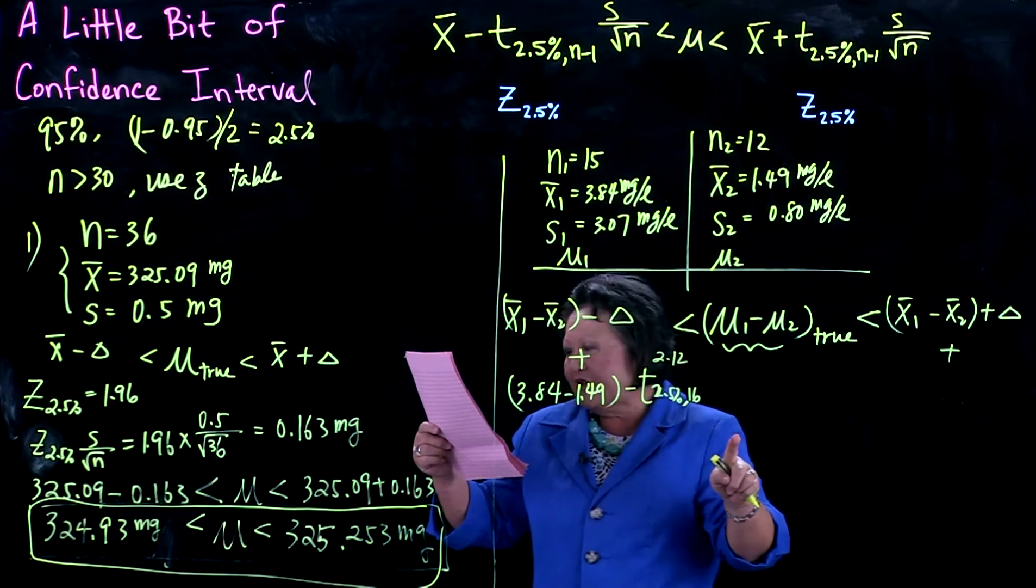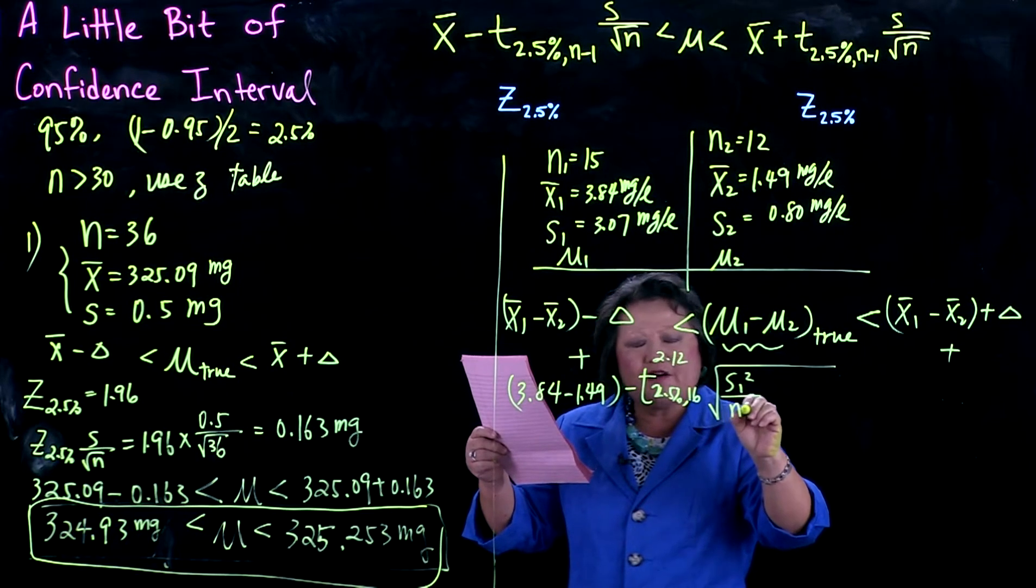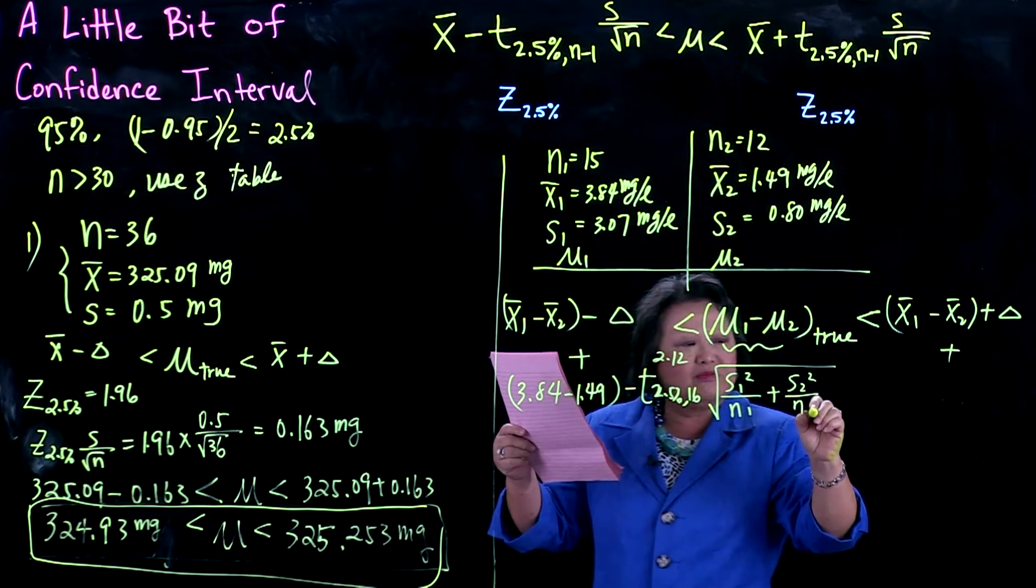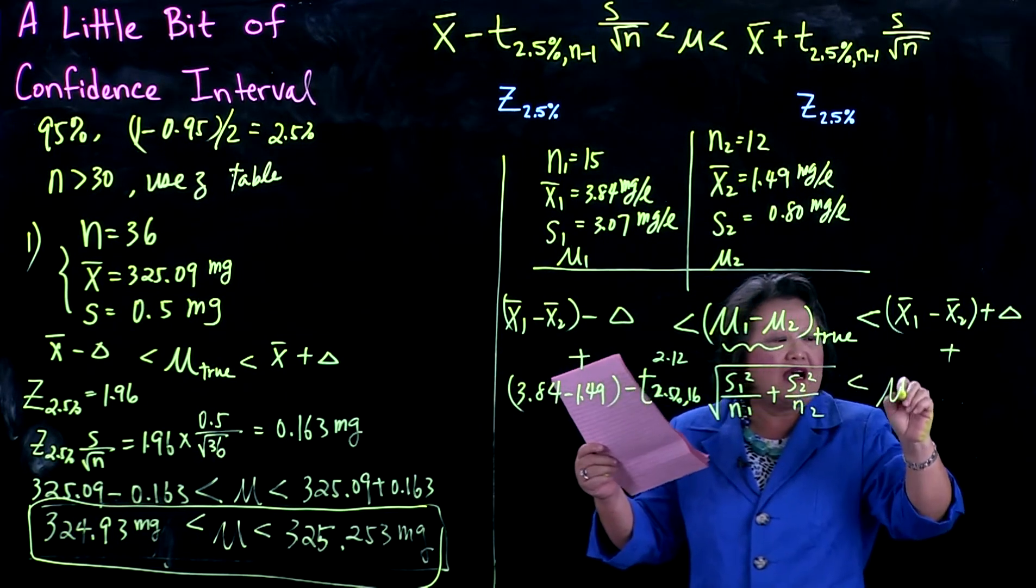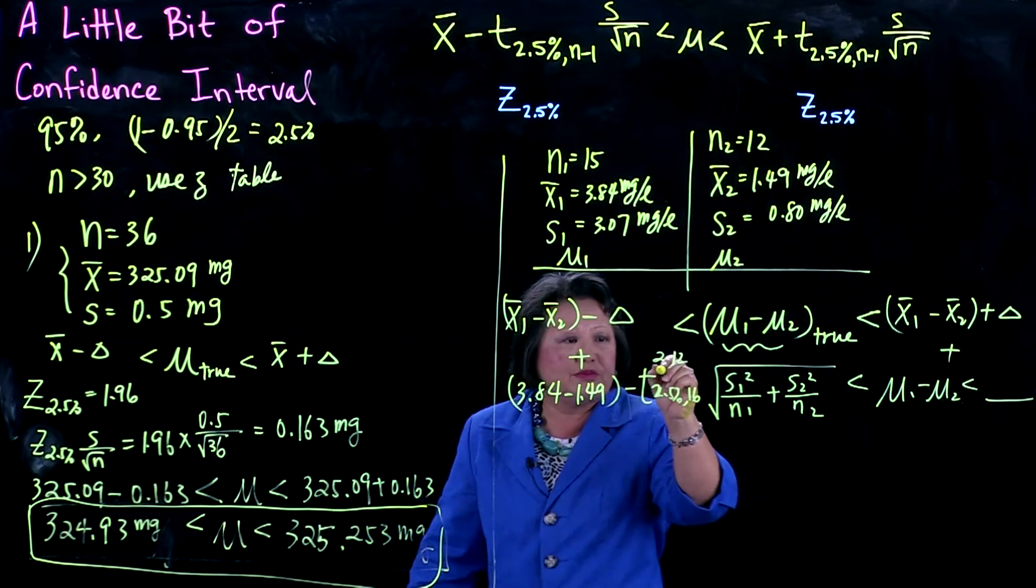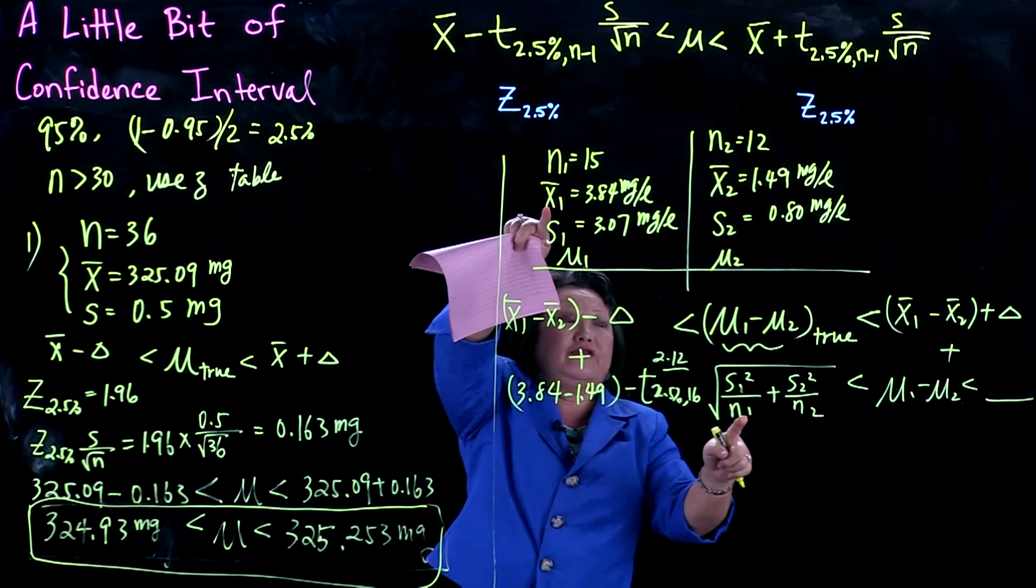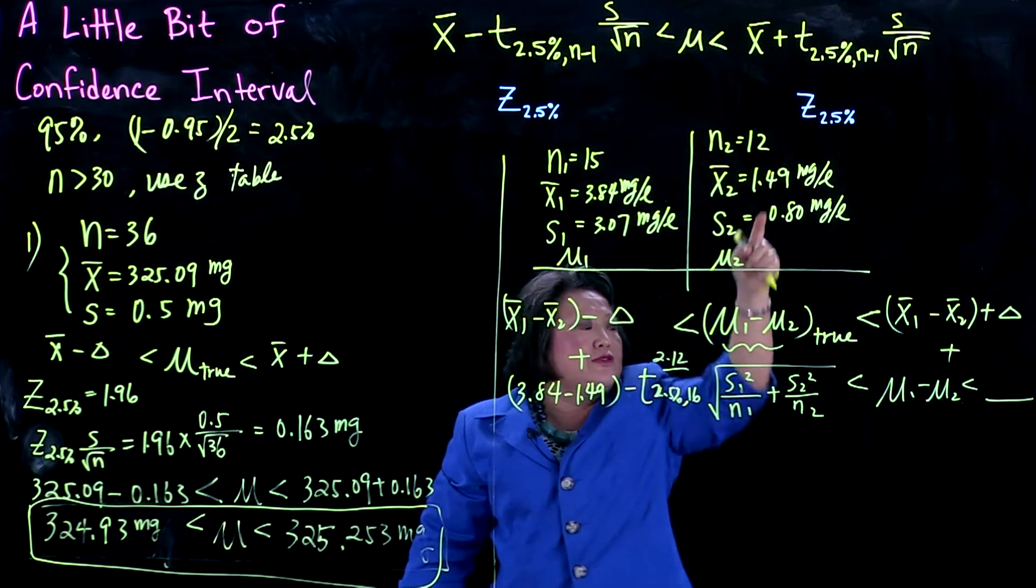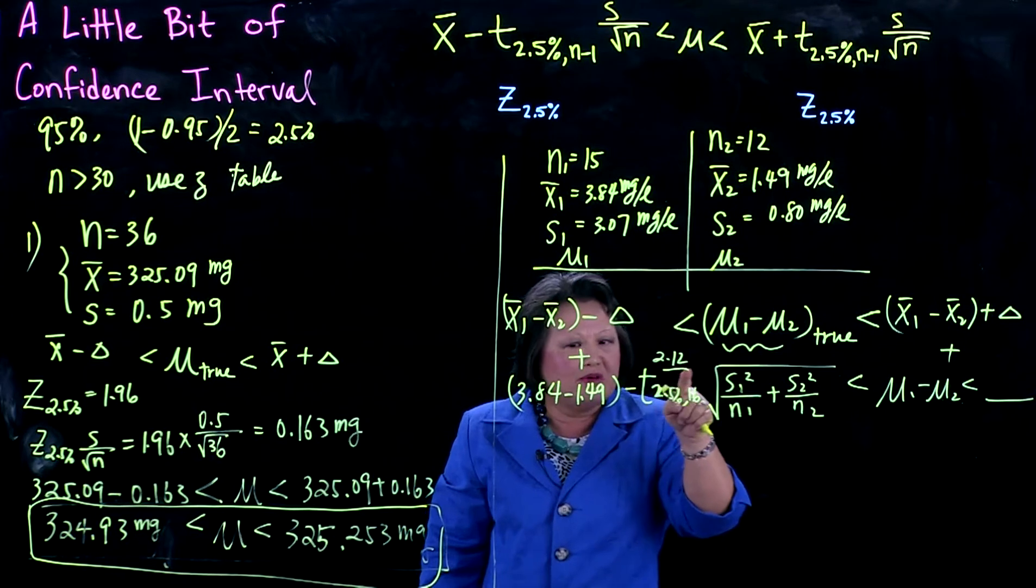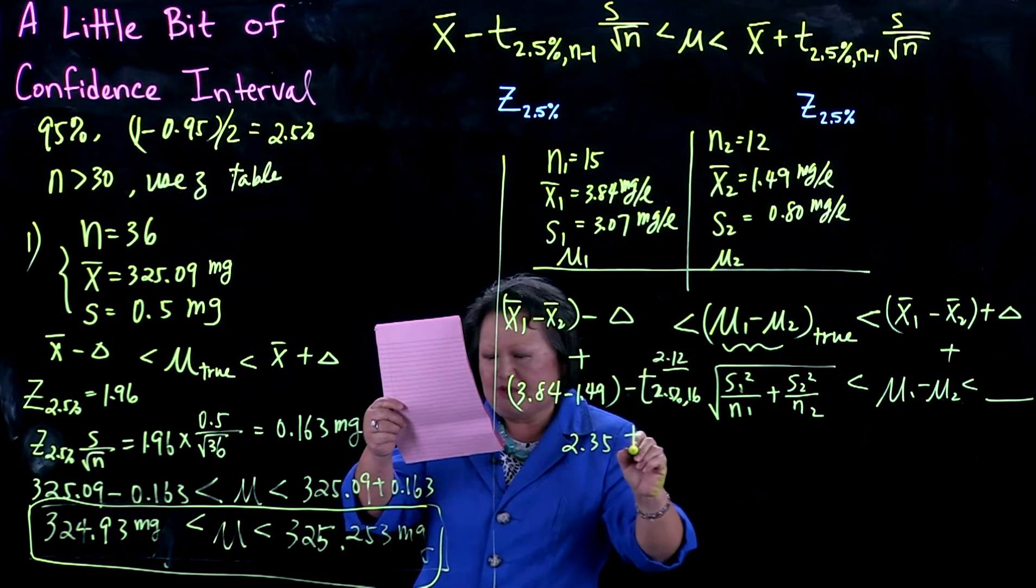This next number looks complicated, but the formula is in every single statistical textbook, so don't worry about memorizing it. Let's calculate: s1 squared is 3.07 squared, n1 is 15, s2 is 1.49 squared, and n2 is 12. You grind this out with the 2.12 multiplier, and after you do that, you have 2.35 plus or minus 1.75.